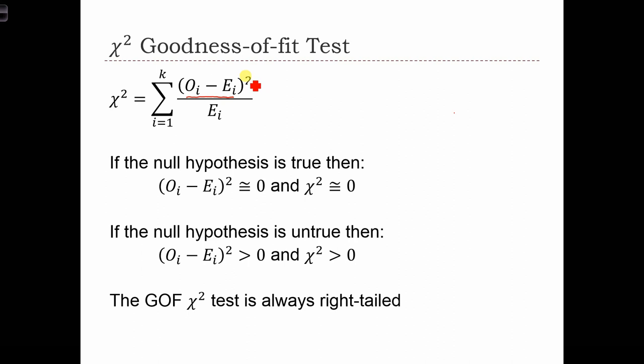Squaring that difference makes all of our differences, whether positive or negative, into positive values, and then dividing by E_i, the expected value that we would see there.